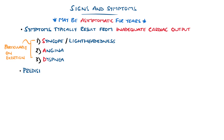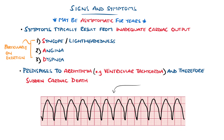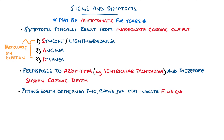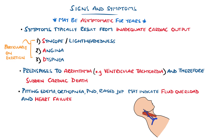Bear in mind that symptoms are not always exertional, as aortic stenosis can predispose to arrhythmias like ventricular tachycardia, causing non-exertional symptoms too, and can cause sudden cardiac death. Features such as peripheral pitting edema, orthopnea, paroxysmal nocturnal dyspnea, and a raised jugular venous pressure are also possible findings, often indicating development of heart failure.